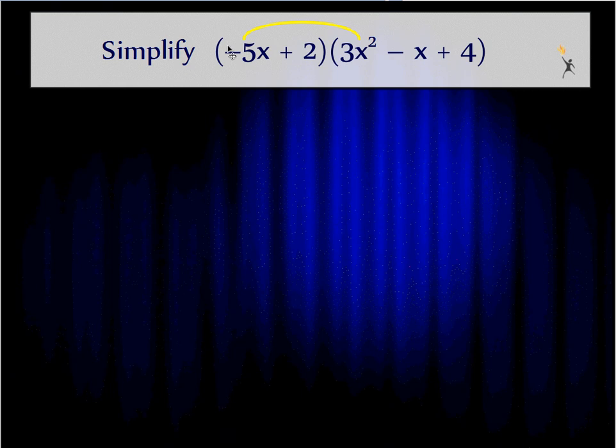First I'm going to distribute the negative 5x to everything in the second set of parentheses. Negative 5x times 3x squared. First of all, I multiply the coefficients, negative 5 times 3. And then I have 1x in the negative 5x and 2x's over here. That means I have 3x's total. So I'm going to get negative 15x to the third power. Powers and coefficients change in multiplication. Make sure that gets in your notes.